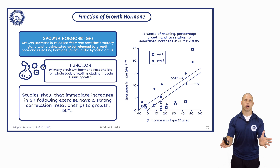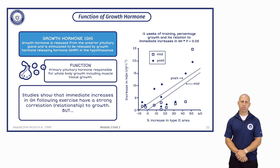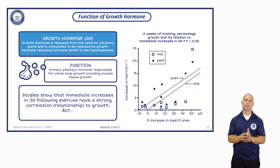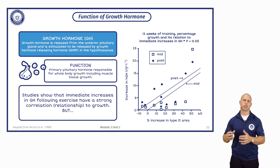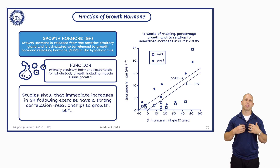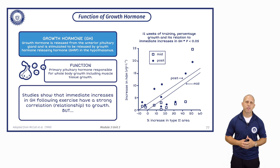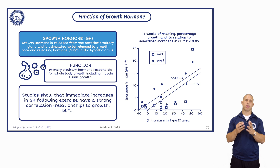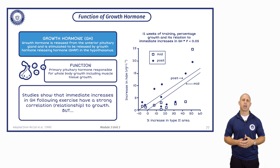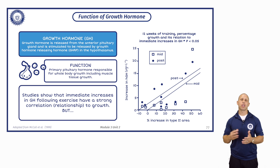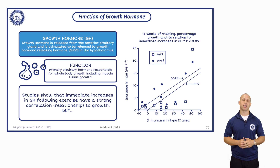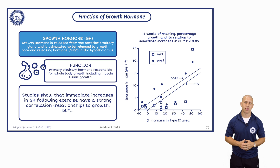I'm sure you've heard that growth hormone is related to muscle growth. Let's take a look at this figure. This figure is from McCall in 1999. On the Y axis you have acute growth hormone release, and on the X axis you have percentage increase in type 2 fibers. There was a significant relationship. The solid dot all the way on the top right is above the 50% increase on the X axis and up to the highest growth hormone release of about 20. You can see that is a direct relationship between the acute growth hormone response and the increase in cross-sectional area, or hypertrophy, of type 2 fibers at the end of the study — saying that on average, the changes in growth hormone after exercise correlated to the hypertrophy response at the end of the study.